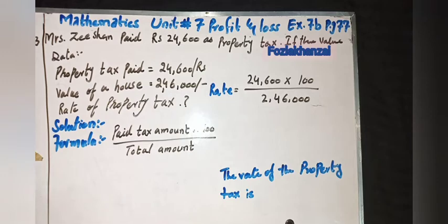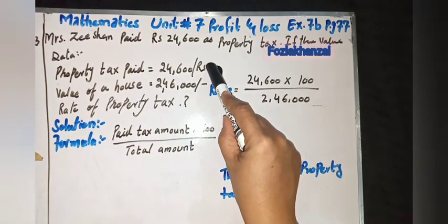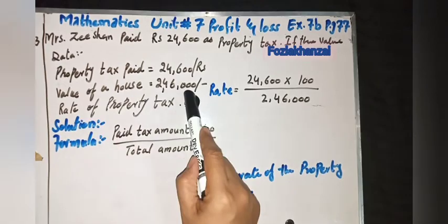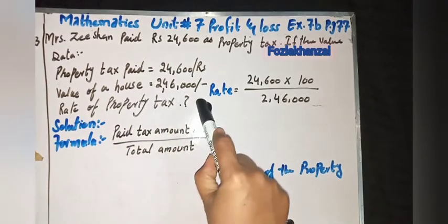According to the data, property tax paid means this amount is given. Value of the house is 2 lakh 46,000 rupees. Rate of property, put the question mark, we will find it.